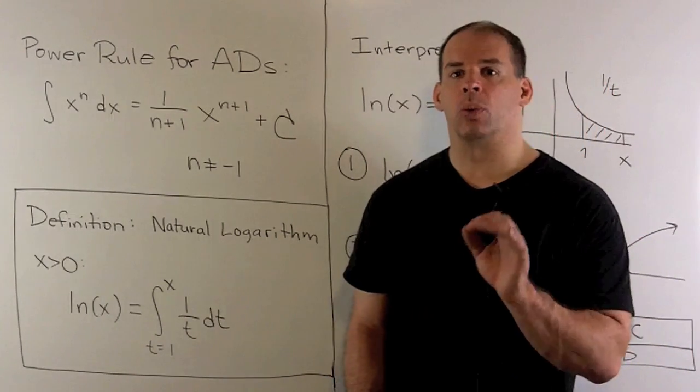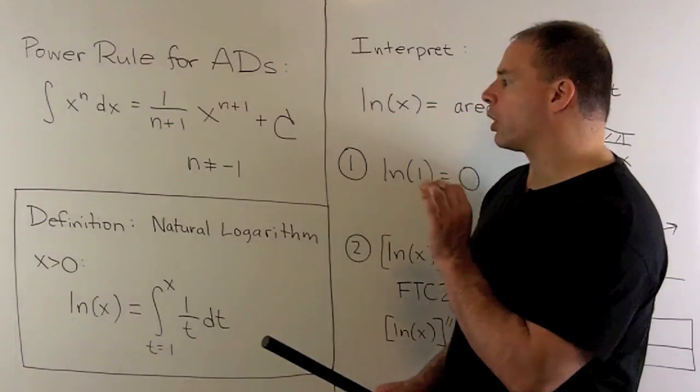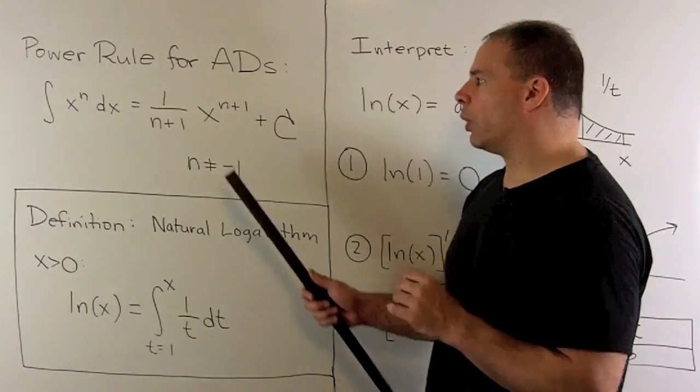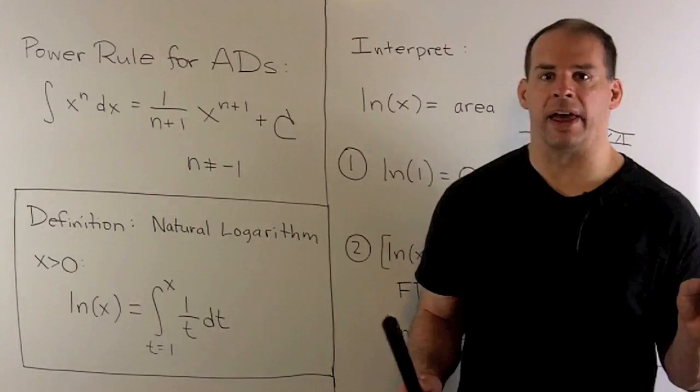Now, this rule will work when n is not equal to minus 1. Just looking at the formula, if you let n be equal to minus 1, we divide by 0 in this term, and we wouldn't want that.